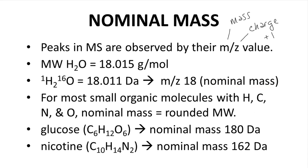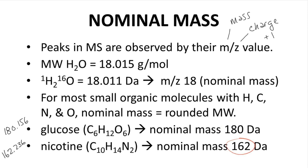For small molecules with atoms like hydrogen, carbon, nitrogen, and oxygen, which have 99% abundance of one major isotope, the nominal mass is the same as the molecular weight rounded to the nearest integral value. Glucose has a molecular mass of 180.156 grams per mole — its nominal mass is 180. Nicotine has a molecular mass of 162.236 grams per mole — its nominal mass is 162.